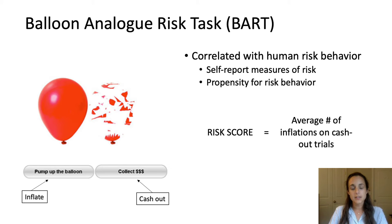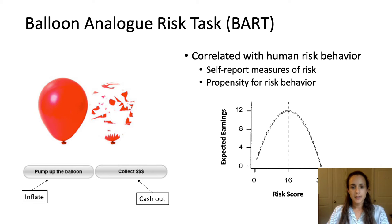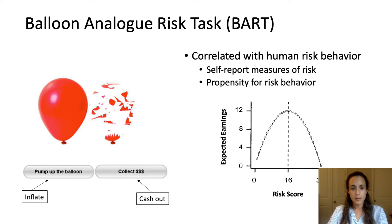By the end of the session, risk propensity is measured by a risk score, which is the average number of inflations on cash-out trials only — not including trials in which the balloon pops. The player does not know when the balloon will pop, so they can inflate as much as they'd like, and their only instruction is to maximize their reward. So if a balloon could be inflated up to 32 times, the best strategy to most efficiently maximize reward would be to cash out at 16 inflations on average, as the probability of popping increases with each inflation.